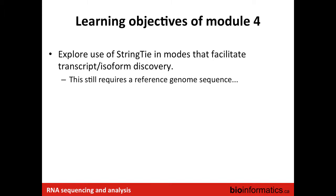This module is all about running StringTie in a few additional modes that facilitate transcript and isoform discovery. These commands are going to be very familiar to what you already did for expression abundance estimation. We're just going to run StringTie in slightly different ways to improve its ability to construct previously undiscovered transcripts and alternative isoforms of particular genes.